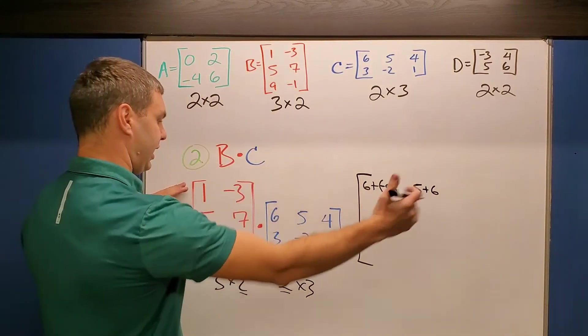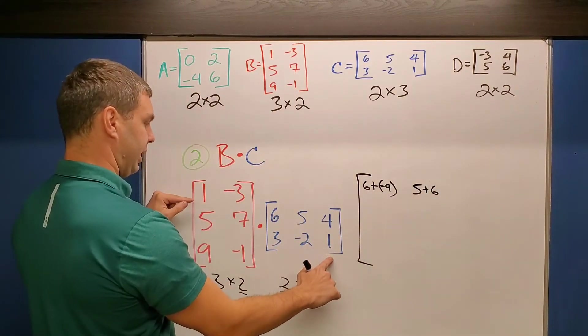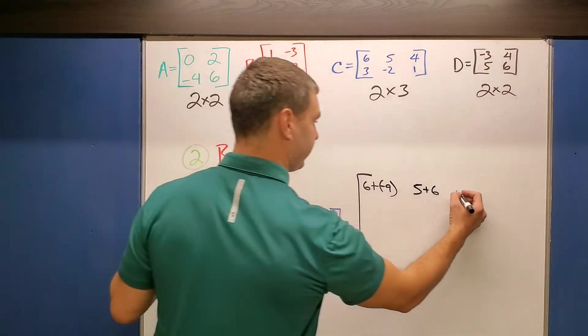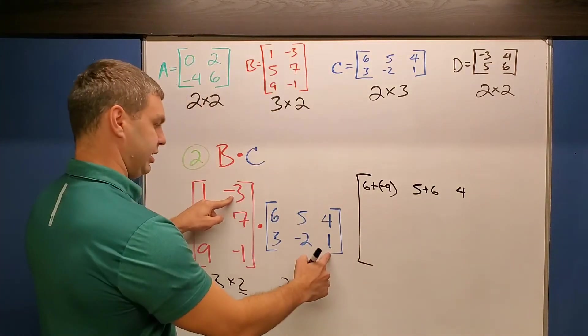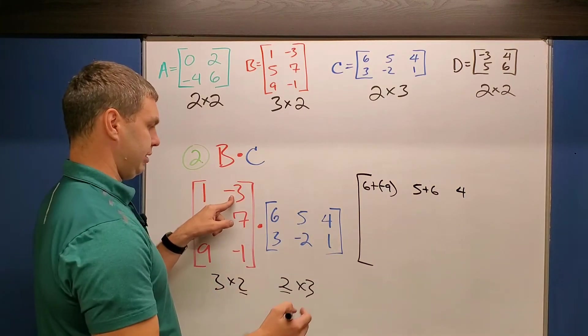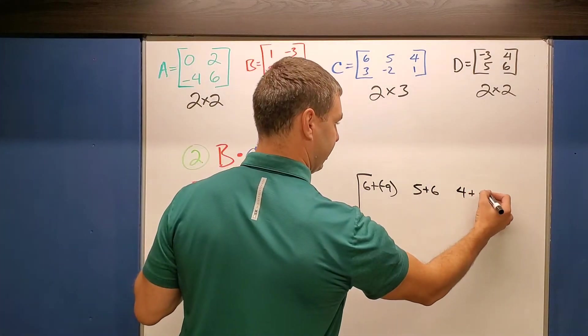And then for the last one, the first row times our last column, which is 1 times 4, which is 4 and -3 times 1 is a -3. So plus a -3.